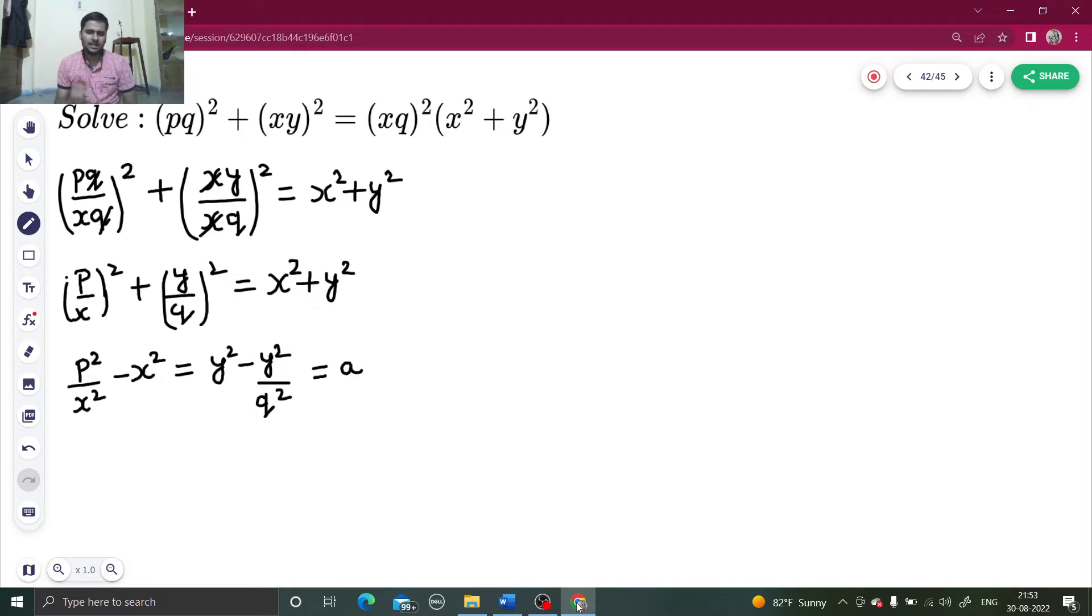The first step is to get this type of equation where function of P and X is on one side and function of Y and Q is on the other side. Equate both of them to another constant A.